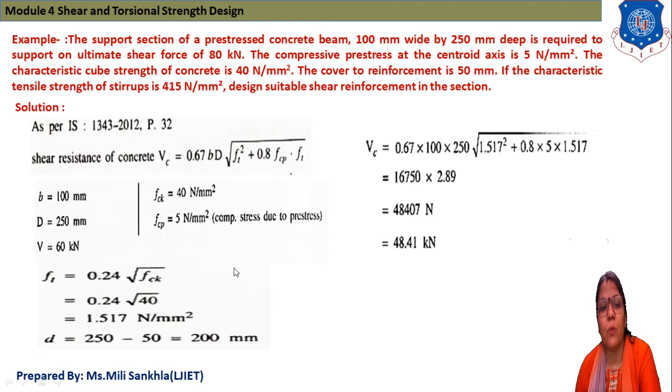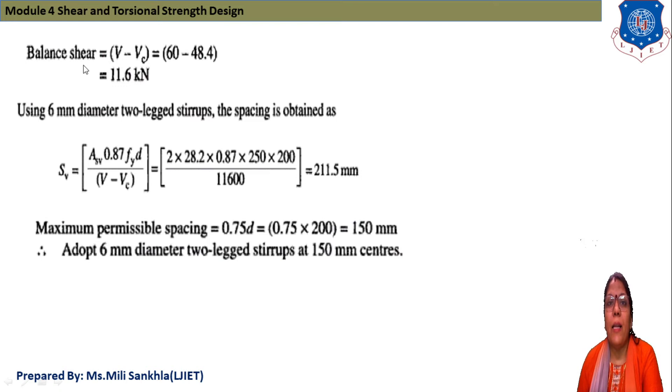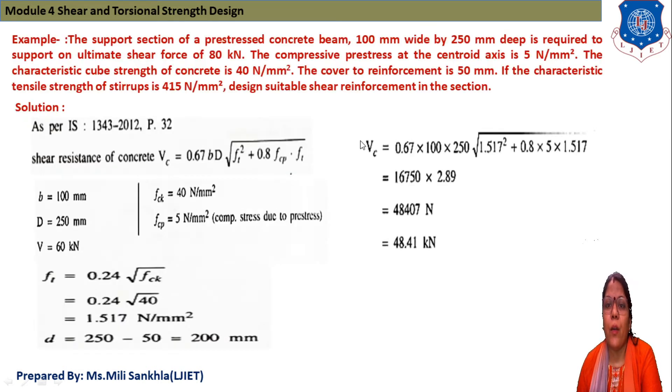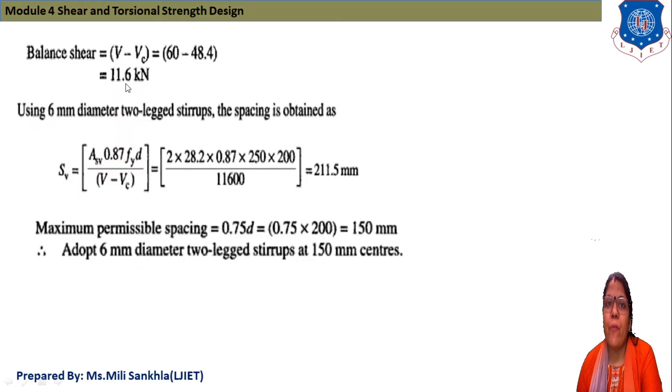Because reinforcement cover is 50 mm, subtract it, and the effective depth we get is 200 mm. Balance shear is V - Vc = 60 - 48.8 = 11.6 kN.